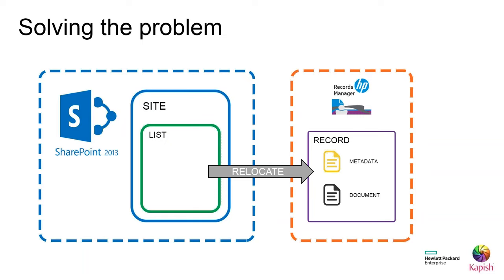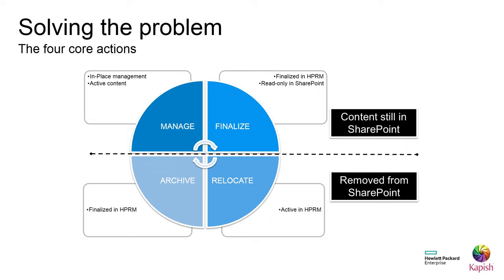Manage is one of four core actions that the integration has. Managing content is in-place management — the content is still editable and still surfaced through SharePoint. The Finalise process manages the content if not already managed and also finalises it, making the item read-only in SharePoint. The Relocate process manages the content if not already managed, then removes it from SharePoint — the end user perceives it as moving from SharePoint to HPRM, and it's still an active record. The Archive process relocates the item and finalises the record. You can start at any point depending on your requirements, and these four core actions can be applied to individual items, multiple items, lists, sites, and so on.